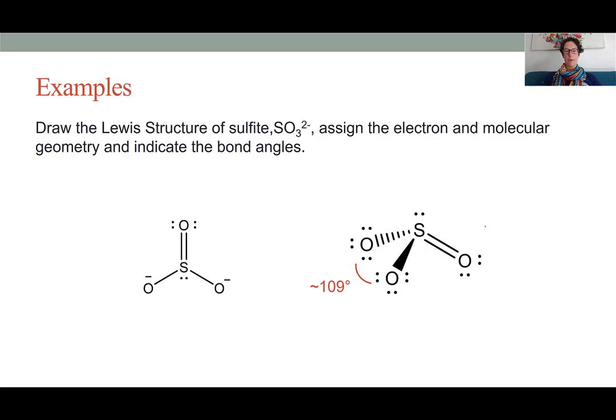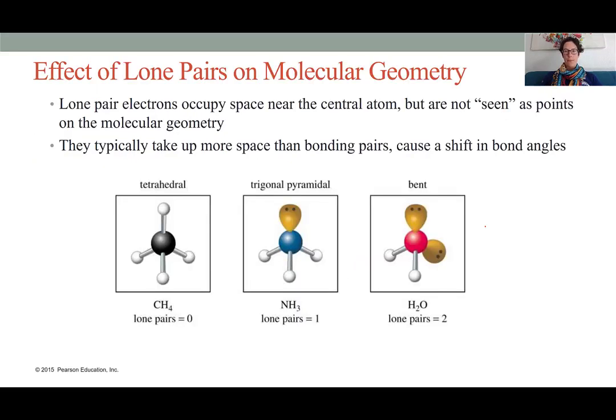Let's explore that a little further. Lone pairs do occupy space around a central atom, and they will repel the electrons that are in the bonding pairs, but they're not really seen as points within the shape of a molecule. So when we're talking about molecular geometry, we look at the shape of the molecule should we ignore the actual lone pair electrons. When we do that, we have to also account for the fact that lone pair electrons generally sit closer to the atom and form a more broad cloud of electron density than bonding pairs. And so lone pairs essentially push down on the bond angles of the bonding electrons.